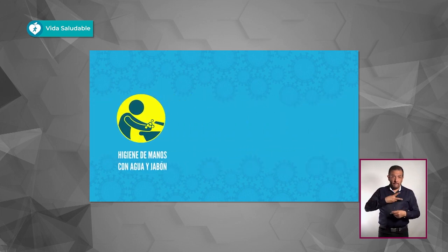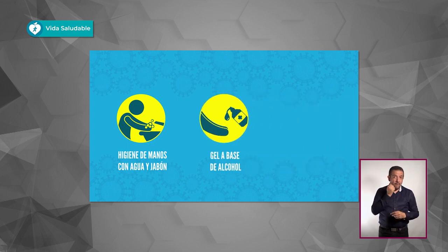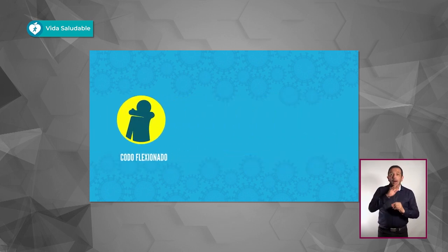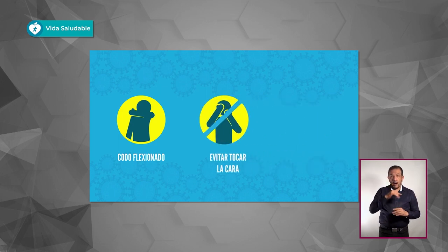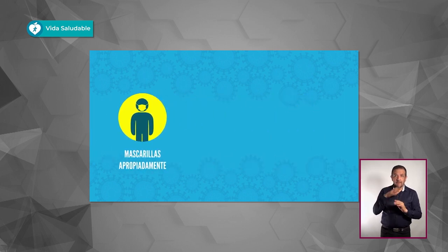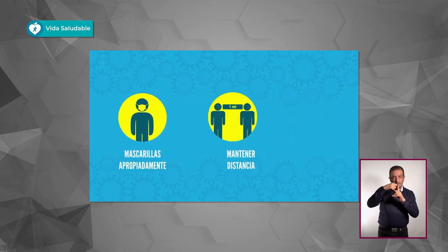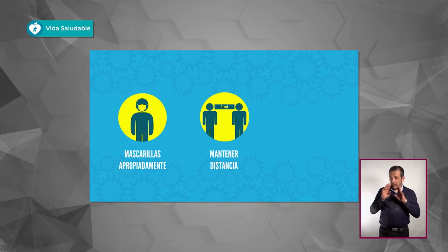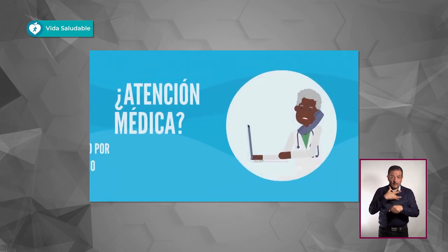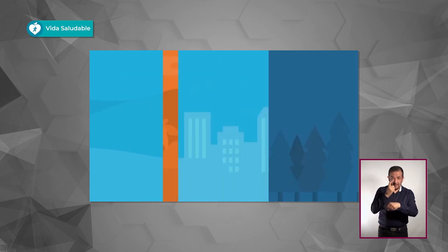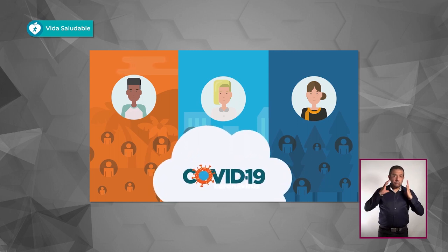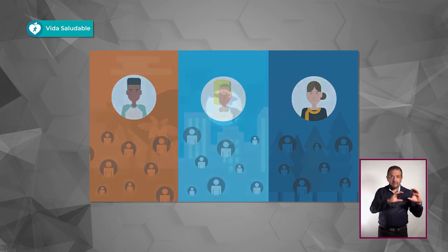Para evitar la transmisión, todos debemos realizar la higiene de manos regularmente con agua y jabón o con gel a base de alcohol. Cubrirnos la boca y la nariz al toser o estornudar con un pañuelo desechable o con la parte interna del codo flexionado. Evitar tocarnos la cara y evitar el contacto cercano con quienes presentan síntomas. Usar mascarillas si tienes síntomas, mantener al menos un metro de distancia y quedarte en casa si tienes síntomas de COVID-19. Si te sientes mal, busca atención médica, pero llama primero por teléfono.